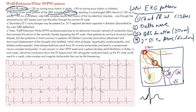So you have a P-wave because the atria depolarized, then a short PR interval because conduction into the ventricle is occurring earlier. You have the delta wave because of that slow cell-to-cell depolarization in the ventricles, and the QRS complex is widened because that initial depolarization wave prolongs it. The terminal portion is sharp as the normal conduction system catches up.